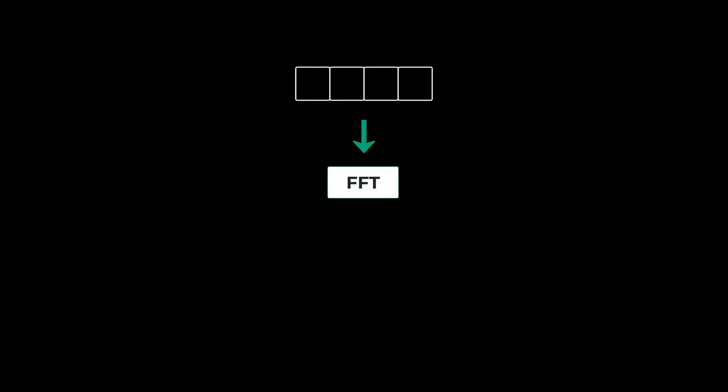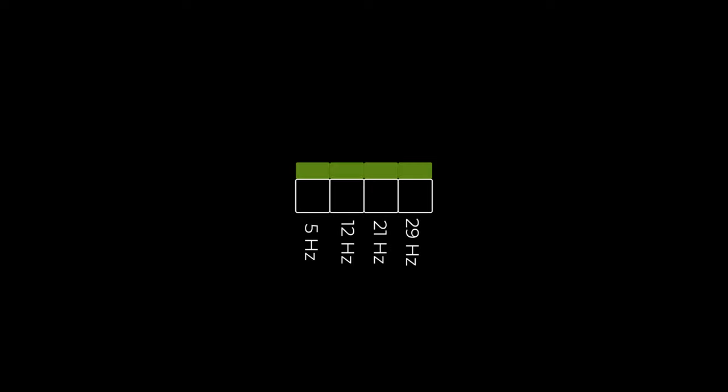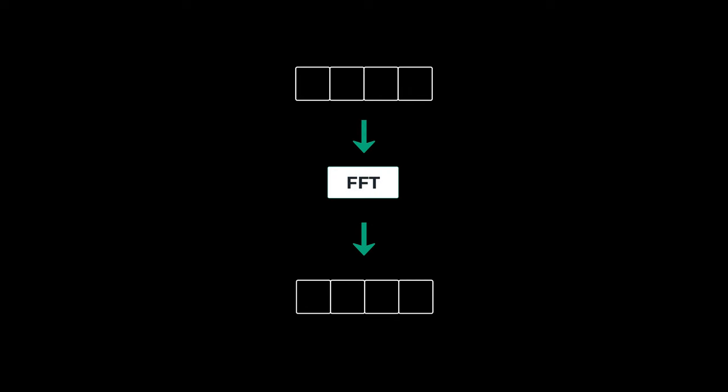It's important to understand that the array size going into FFT is the same length as the array coming back out. That array coming back out is your frequency range — it's a bunch of buckets. During the size of that audio sample, how many times did it count each of the frequencies for each of those buckets? The number of buckets you have is dependent on the size of the audio sample. The size of the input signal is the same as the number of buckets of frequencies that you get.